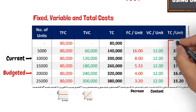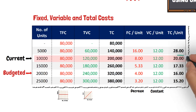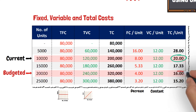And therefore, the total manufacturing cost per unit won't be the same at different production levels. The total cost per unit at the current production level is 20, but it is only 16 at the target production level, and not the 20 that was used initially in the calculation.